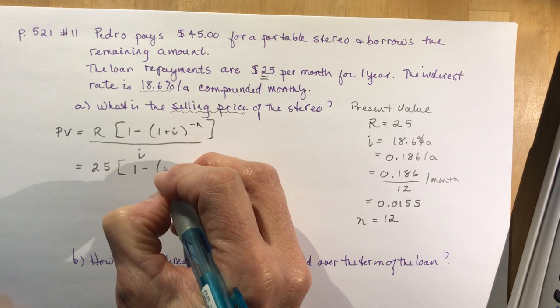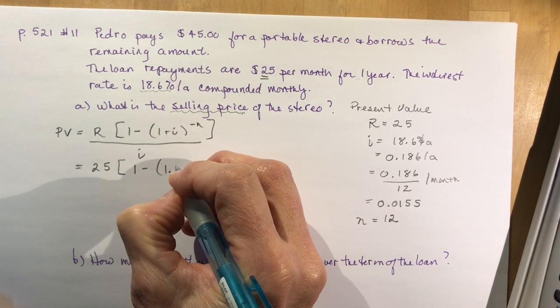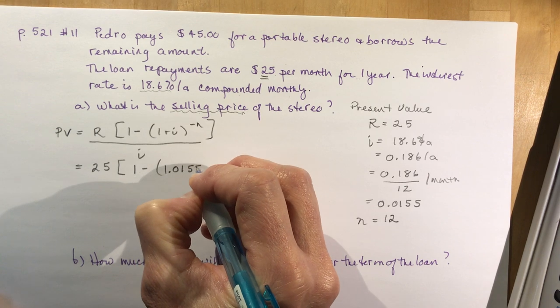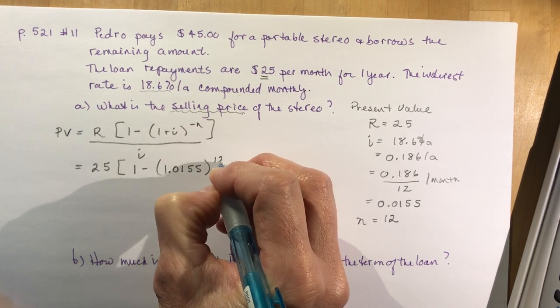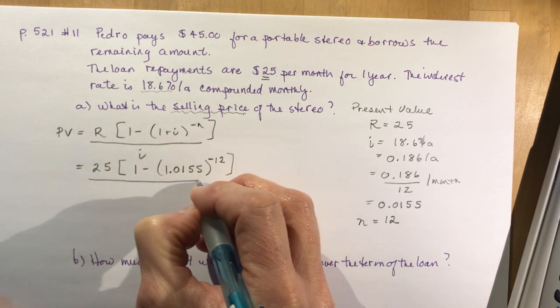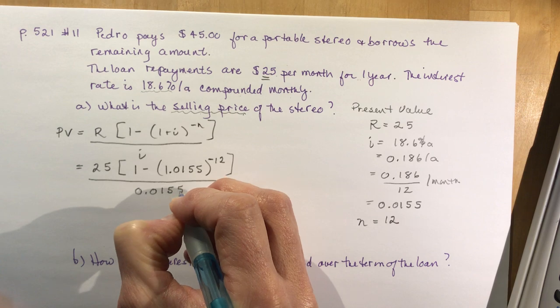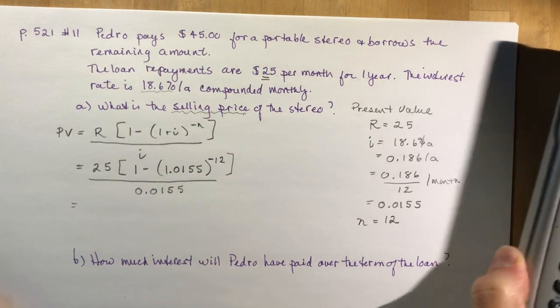So I have 25, 1 minus 1.0155 to the power of negative 12, divided by 0.0155.